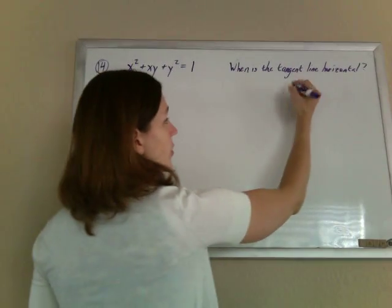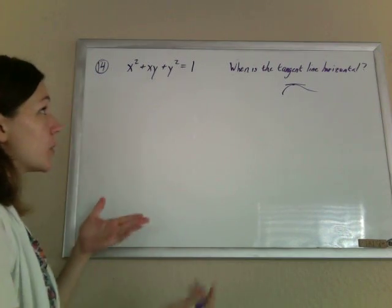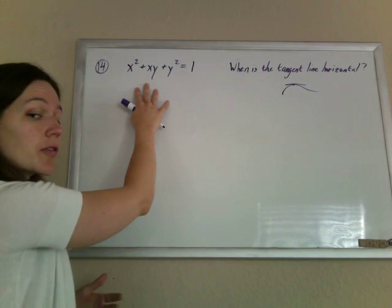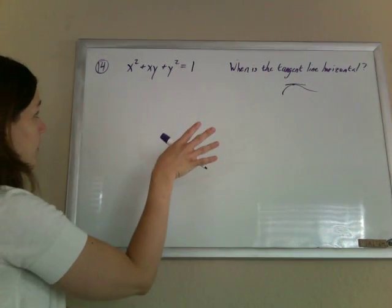Okay, so we know that tangent lines are horizontal when the derivative is zero. So all we've got to do is take the derivative, set it equal to zero. This guy isn't solved for y, so we have to do it implicitly. No problem, just take the derivative of everything.